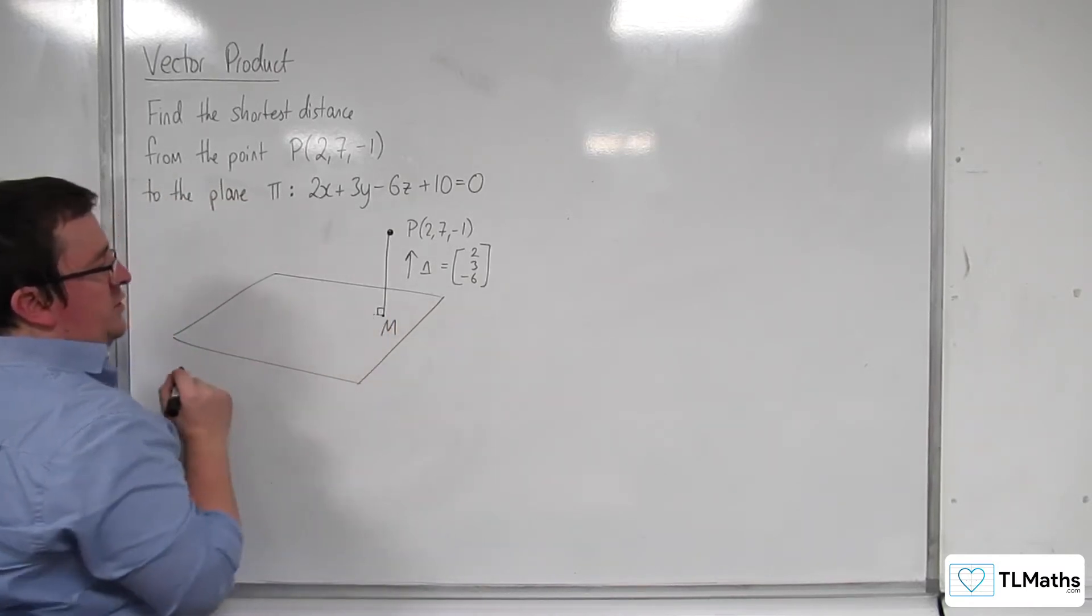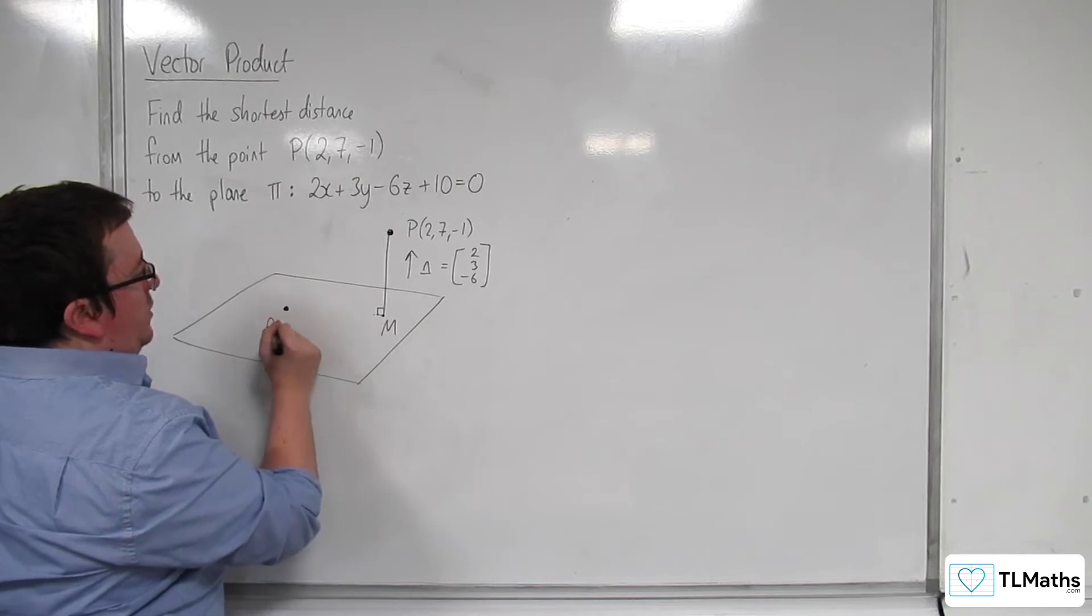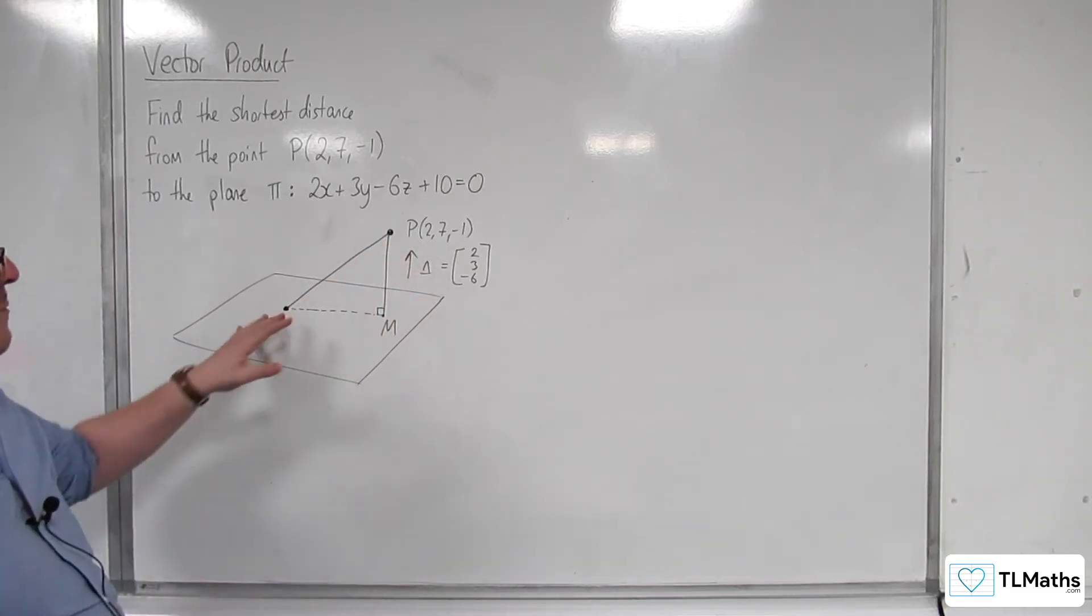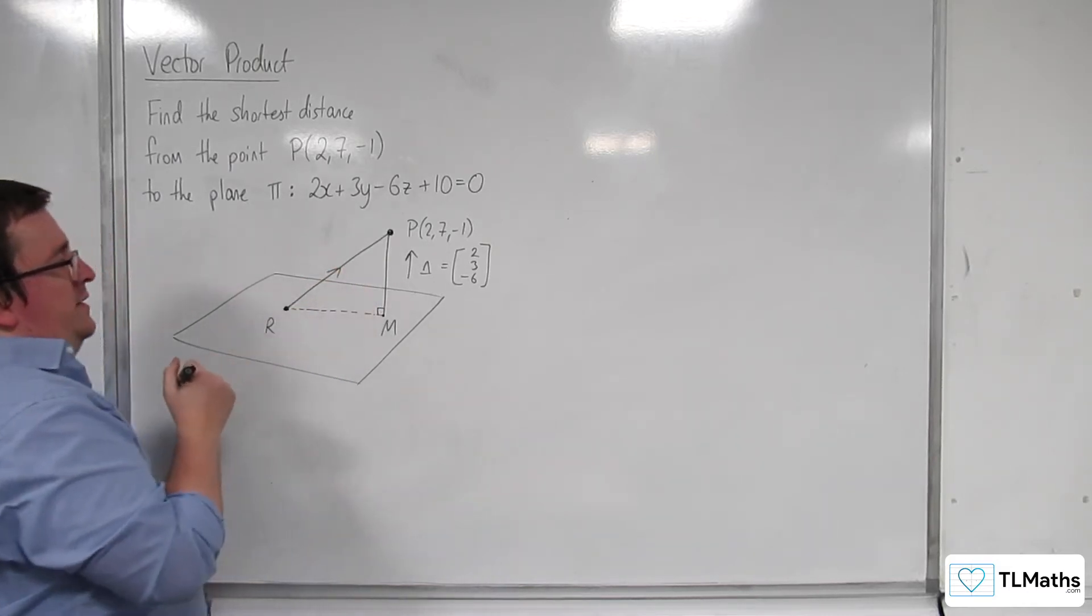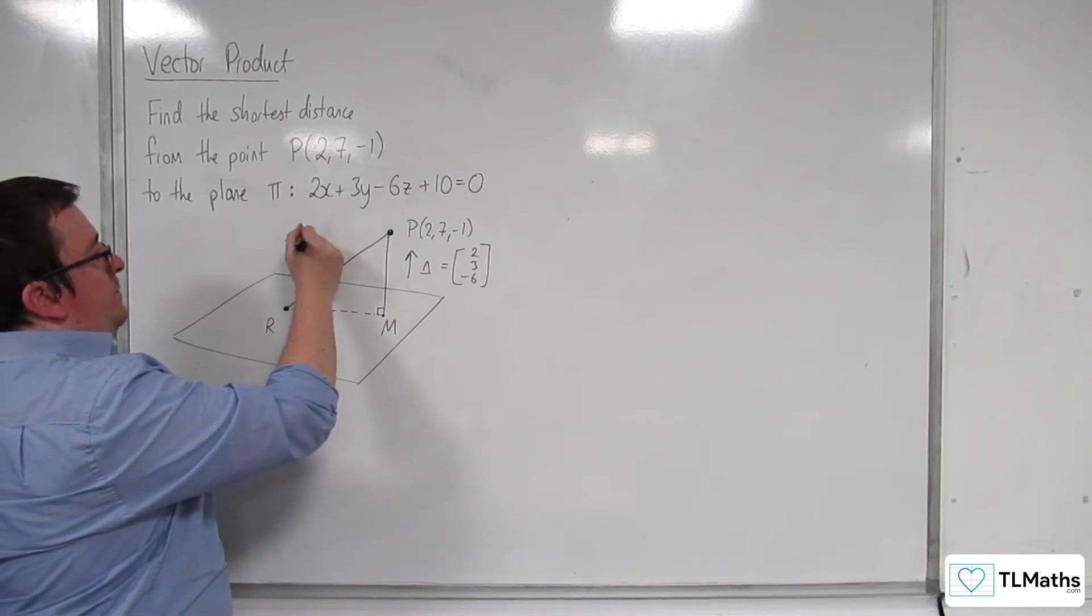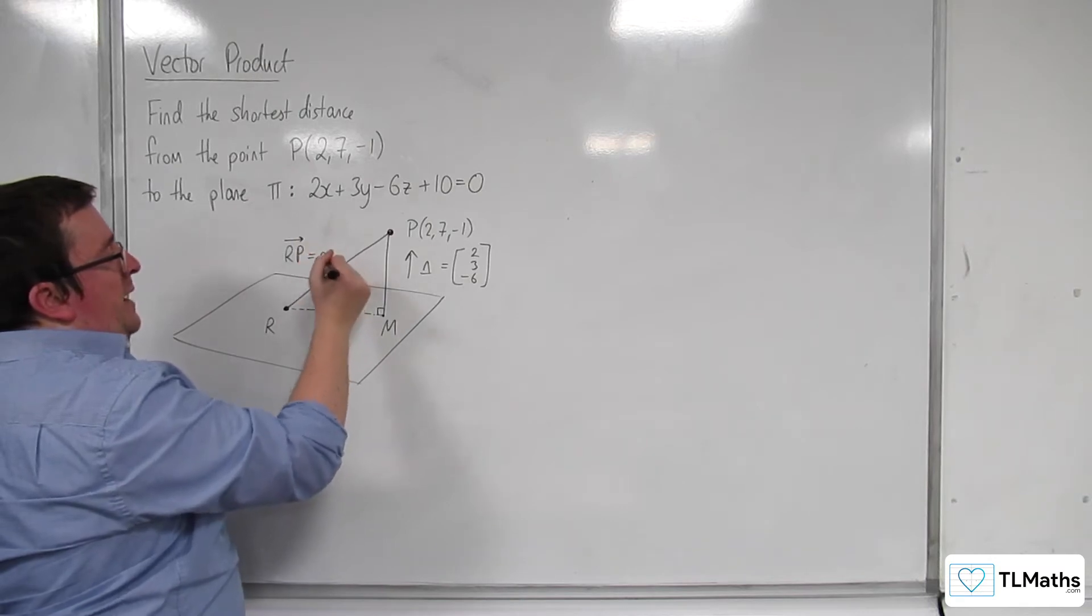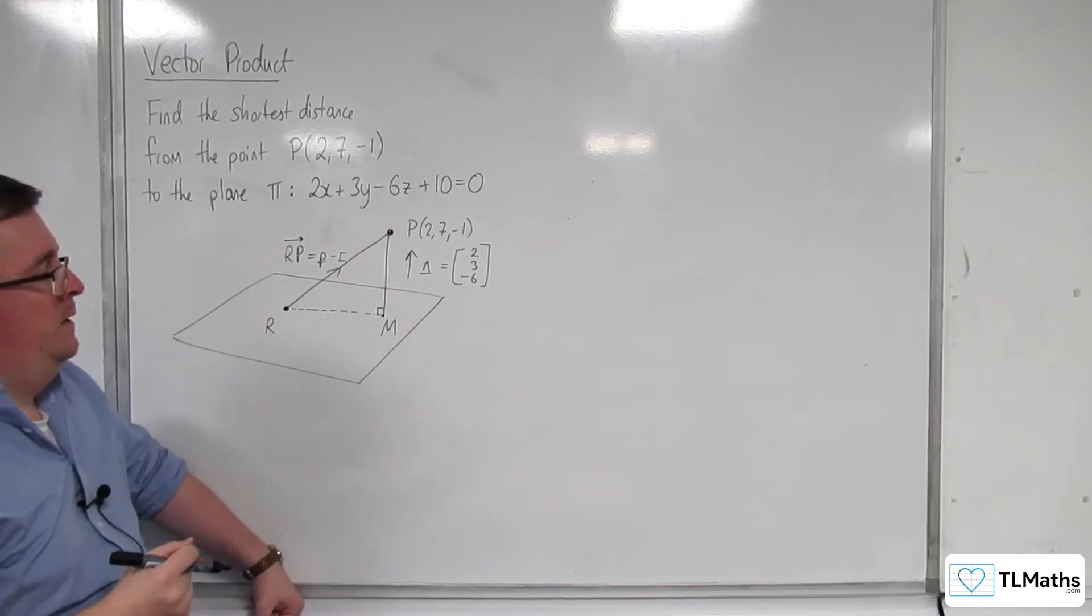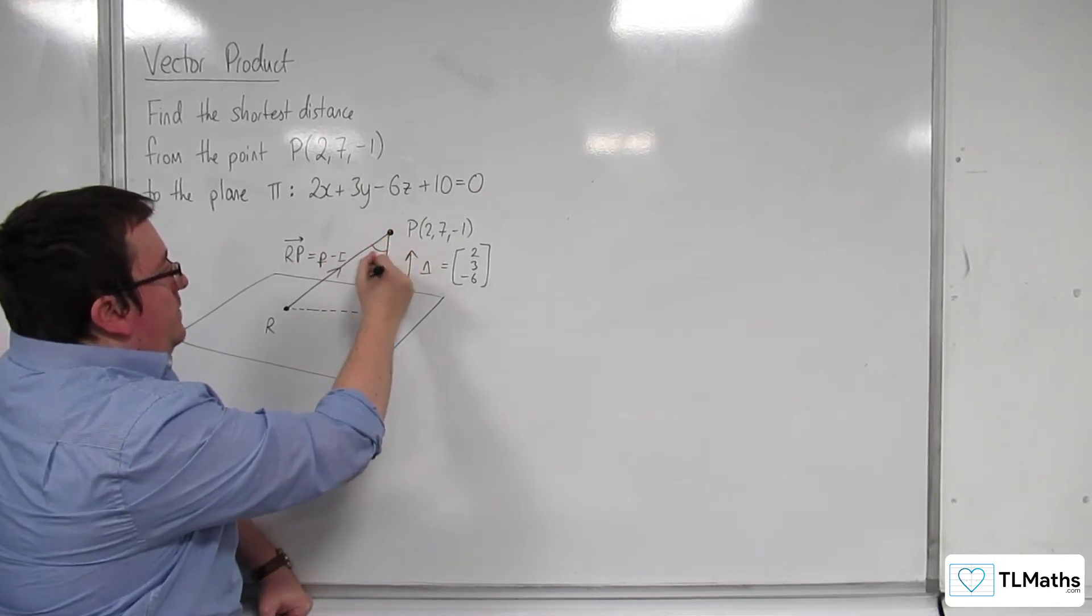Now, I'm also going to choose a point that is on the plane. Let's put it here, and this is going to be the point R. And what I'm going to do is draw a line going from R to P. So this vector from R to P, I could say that P has a position vector lowercase p, and R has a position vector lowercase r. I'm going to consider this angle here as theta.